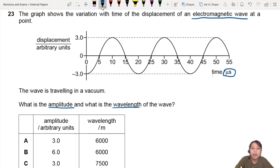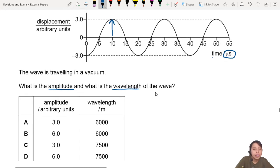Amplitude means from the equilibrium position you go up. So 3 arbitrary units—I don't know what that is, 3 meters, 3 cm, I don't care. So 3 is the answer, not 6. 3 from equilibrium up. You can also say it's equilibrium to down; that's our amplitude.